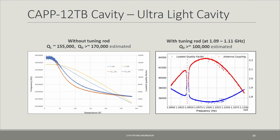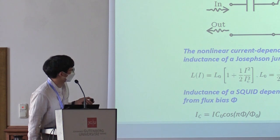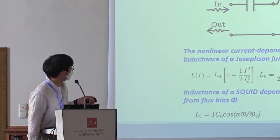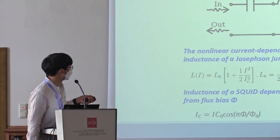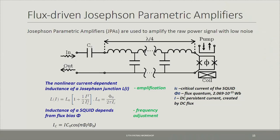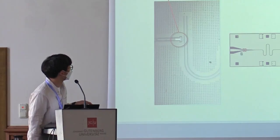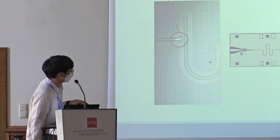The Josephson Parametric Amplifiers (JPAs) amplify the signal across various frequencies by adjusting the resonance via the flux bias applied to the JPA, achieving this with extremely low noise. We use a phase-insensitive method, so we account for the associated noise contribution. The JPAs are developed in collaboration with the University of Tokyo and RIKEN.